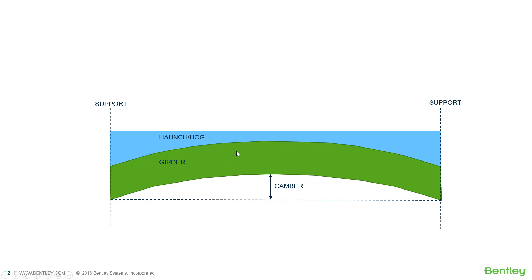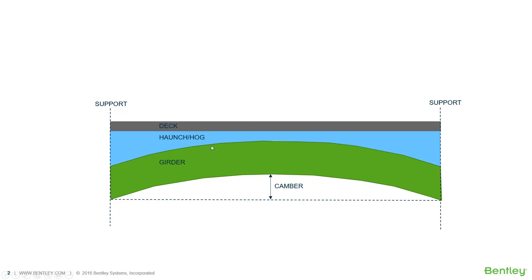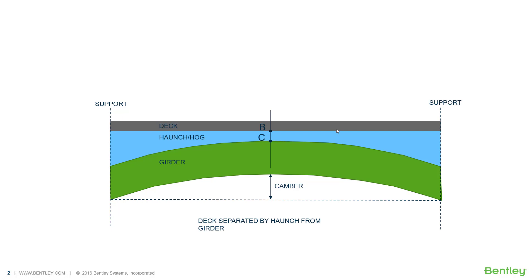On top of the girder we have the haunch or hog, and then we have the deck on top of that. On the centerline, point C is the top of the girder and point B is the bottom of the deck. The deck is separated from the girder by the haunch. This configuration is valid as long as B is above C.